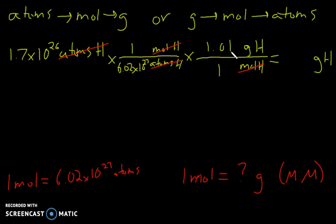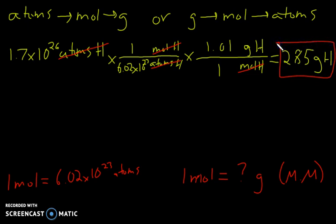Now we've got all our numbers in the right places. We multiply across the top: 1.7×10²⁶ multiplied by 1.01, then divide by 6.02×10²³. Starting with that many atoms, we get 285 grams. So our final answer is 285 grams of hydrogen. Make sure you include the correct unit at the end.